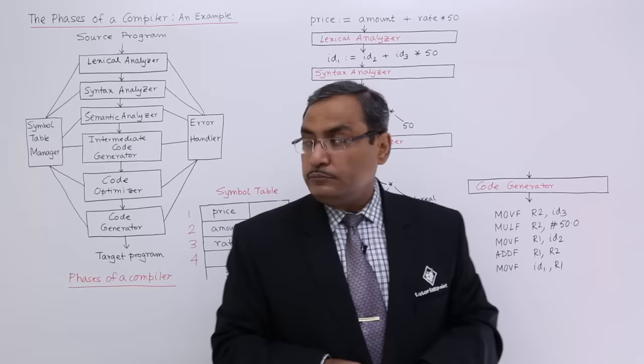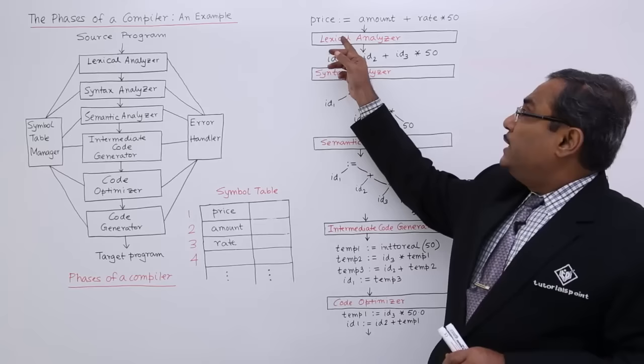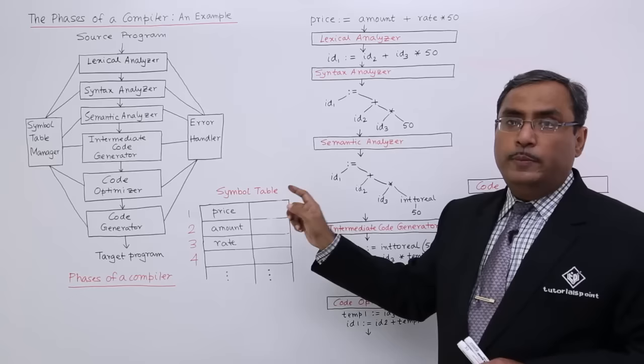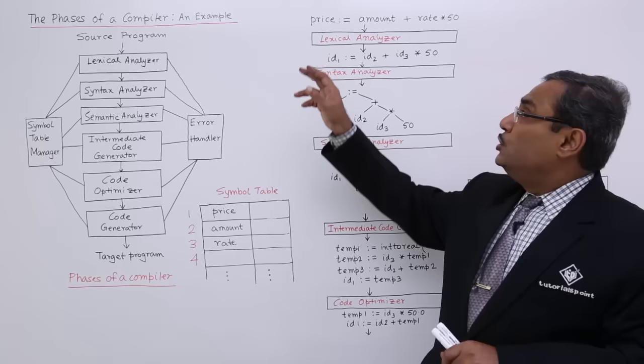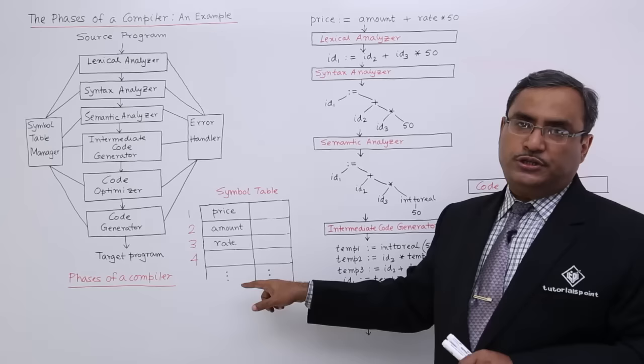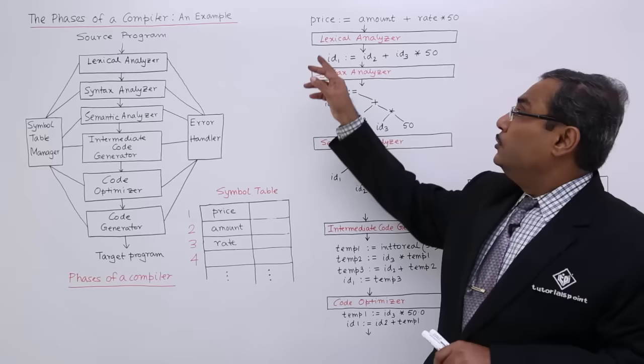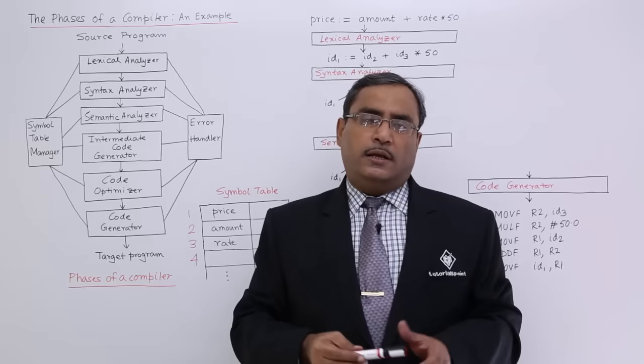During this process, the symbol table gets generated. We have three variables — price, amount, and rate — and the symbol table performs bookkeeping for all of them. There will be a separate video on the symbol table data structure later. Price, amount, and rate are registered in the symbol table, which contains traces of labels, identifiers or variables, literals, and so on.